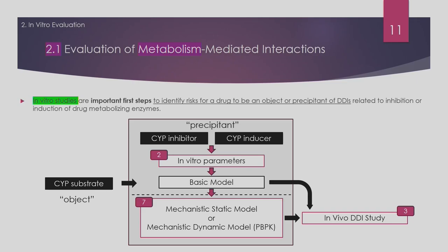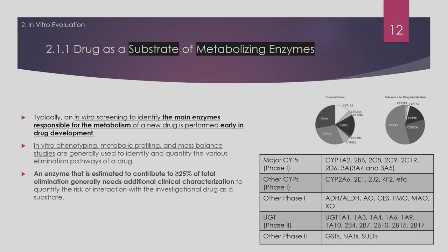Chapter three covers the design, implementation, and interpretation of in vivo DDI study results. Chapter seven provides a good description of static models, while dynamic models — being more complex — cannot be fully covered by the guideline. This is the overall structure: predict using models, then decide whether clinical study is needed.